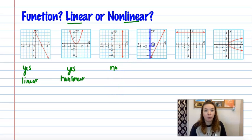So if I look at this fourth example, no matter where I put this blue line, it is only crossing my red line once. So it is a function. And it is a straight line. So yes and linear.